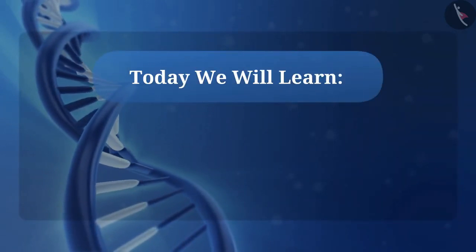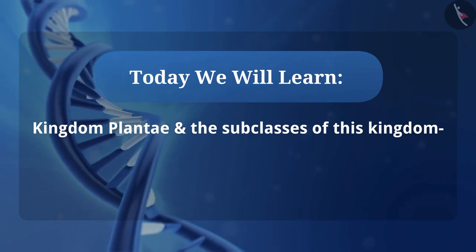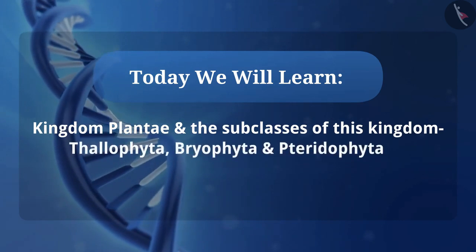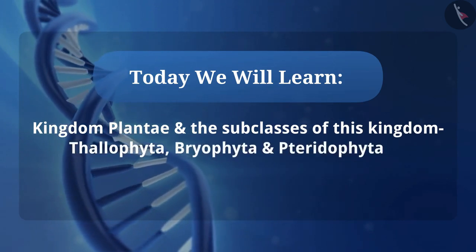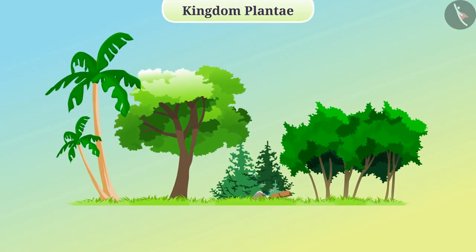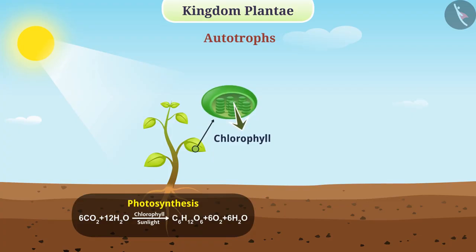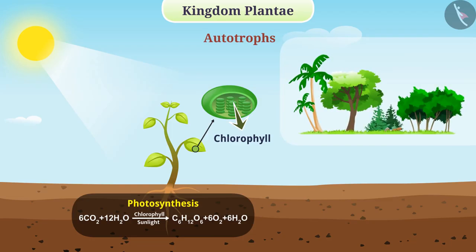Today we will learn about the kingdom Plantae and its subclasses: Thallophyta, Bryophyta, and Pteridophyta. Kingdom Plantae consists of all autotrophs which perform photosynthesis with the help of chlorophyll and can make their own food. All plants are members of the Plantae kingdom.